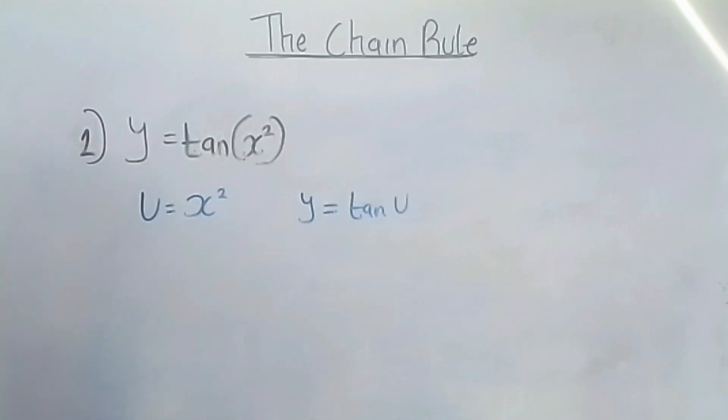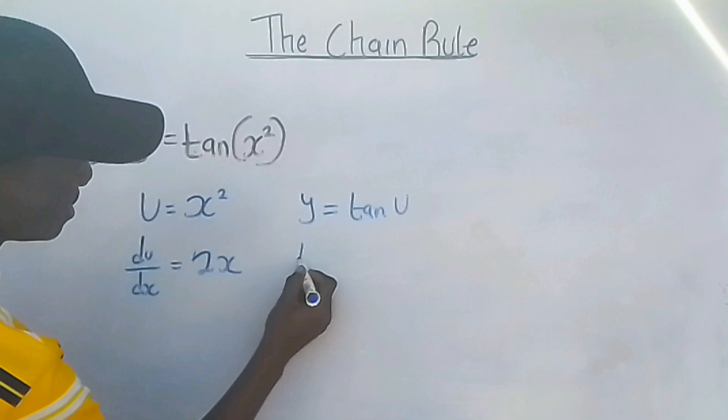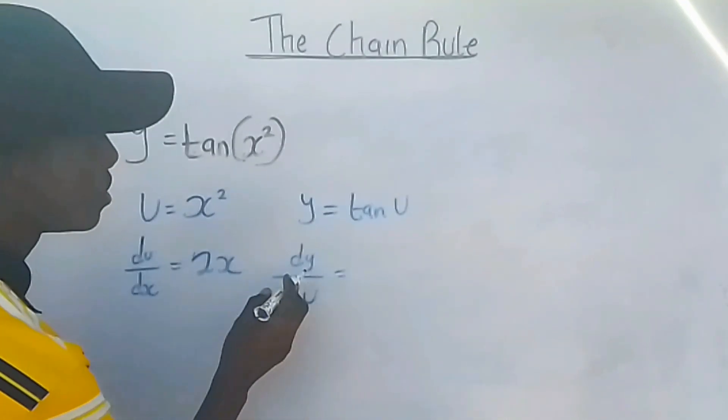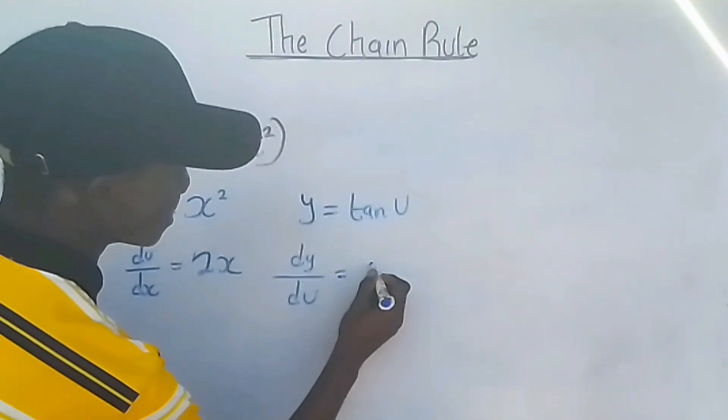The second step is to differentiate both the inner function and the outer function. So du/dx equals 2x, and dy/du equals... when you differentiate tan u, you get sec